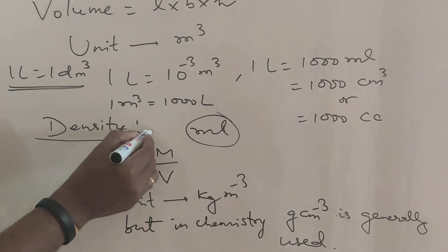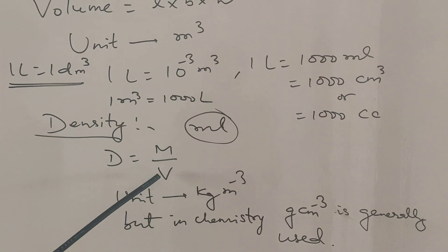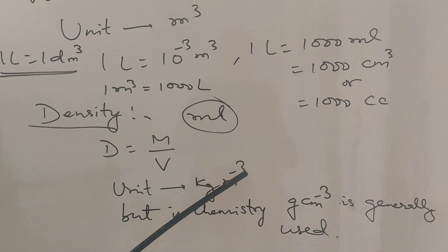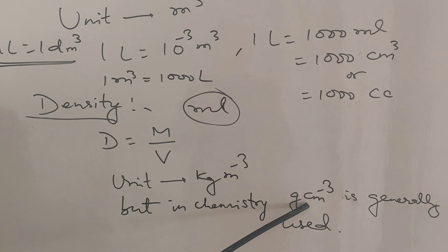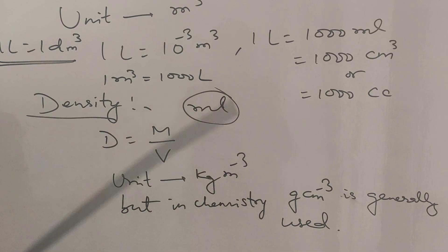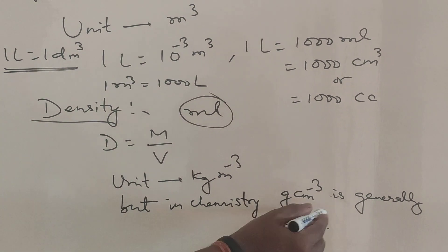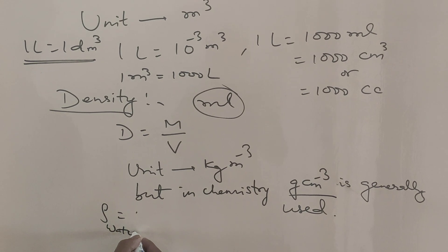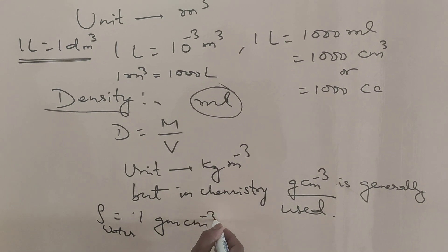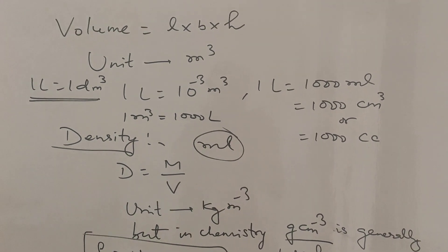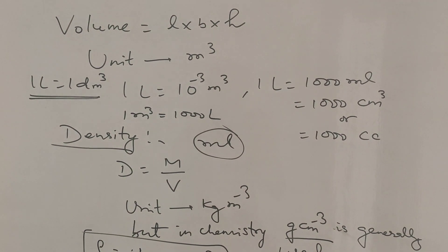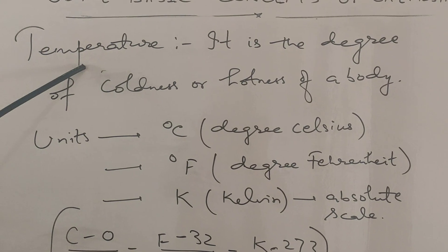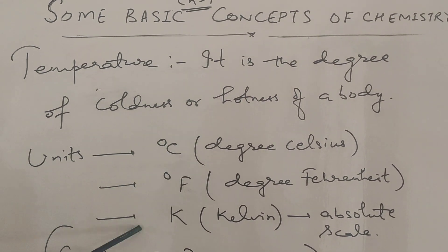Density is the ratio of mass to volume, i.e., mass per unit volume. Its SI unit is kg per meter cube, but in chemistry, gram per centimeter cube is generally used. The density of water is 1 gram per centimeter cube.